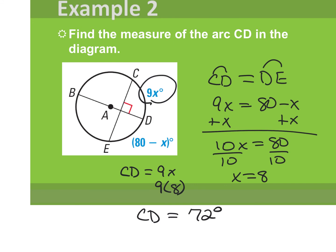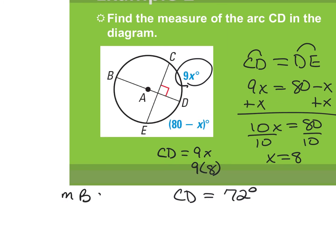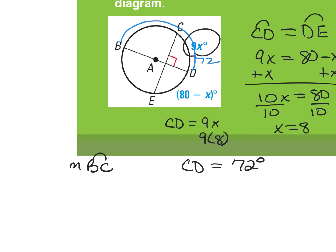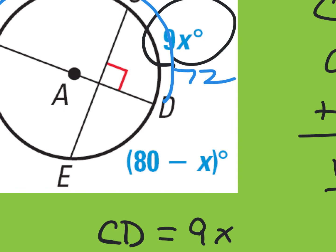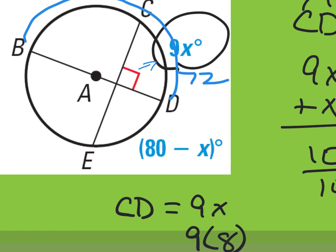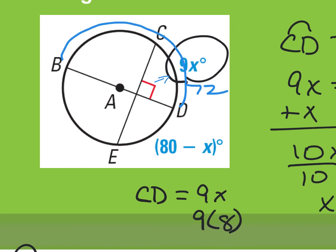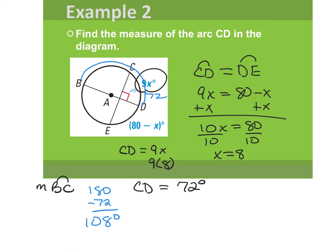What if we needed to find the measure of arc BC? We'd take 72 from 180. Because this is a semicircle arc, 180 minus 72 gives 108 degrees. The reason this arc is not 90 degrees is because that angle is not a central angle — it's not at the center. The only time the arc measure equals the angle is when it's a central angle at the center.